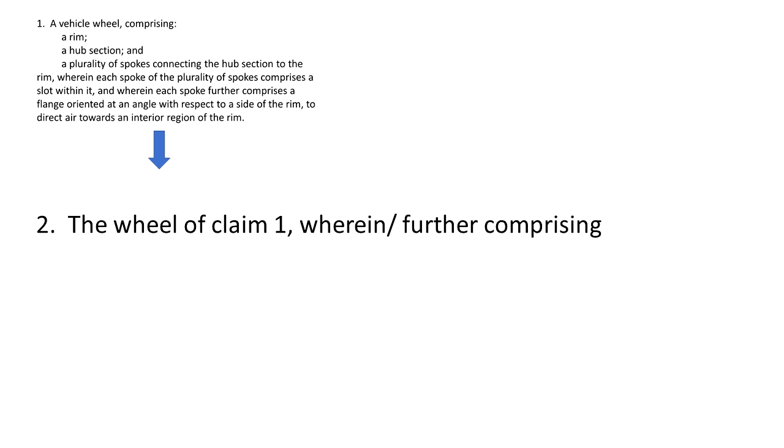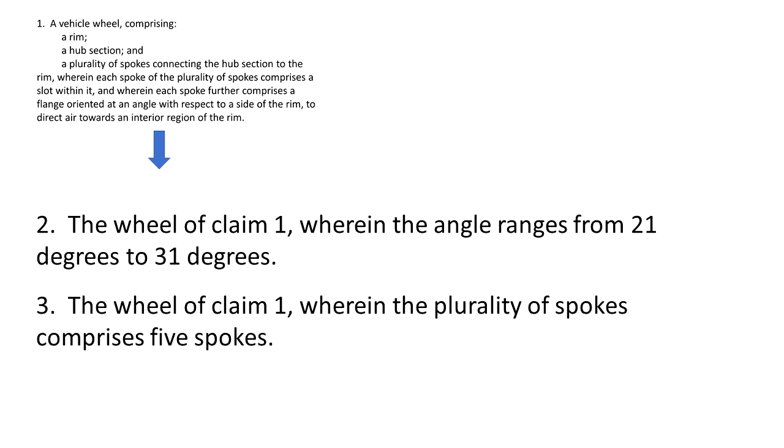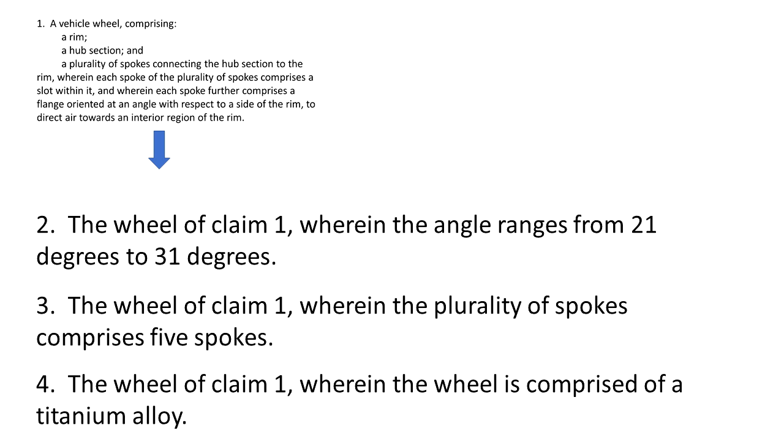To make a dependent claim, we are going to write a claim 2 that depends from the claim 1 and includes more stuff. That means claim 2 will include every limitation of claim 1, plus some other things. So here is a second claim that adds more detail about the angle we mention in claim 1. We can have a claim to a number of spokes, and a claim to what material the wheel is made out of.